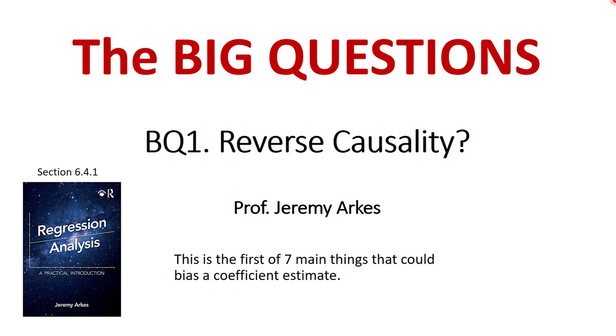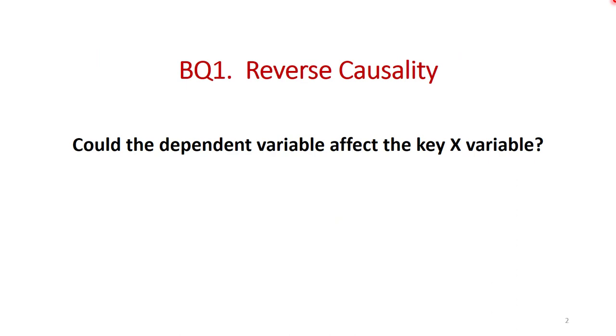This video is on the first of the seven big questions, the pitfalls of regression analysis or the things that can go wrong and bias the coefficient estimate on the key X variable when you're estimating causal effects. This is in section 6.41 of the textbook. The question for reverse causality is could the dependent variable or the outcome variable affect the key X variable? And if so, then there is probably going to be some bias in your estimated causal effect.